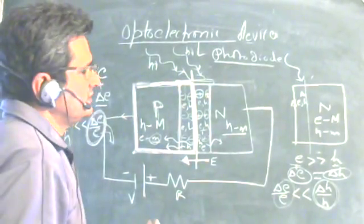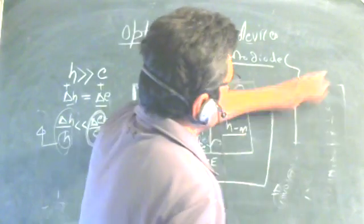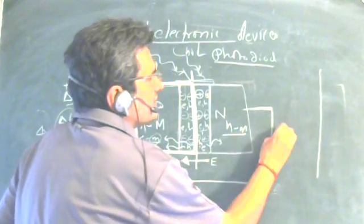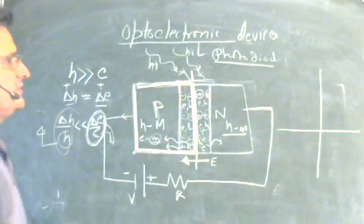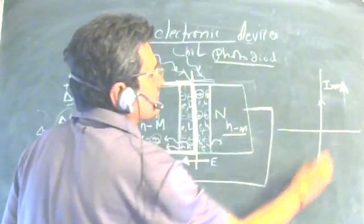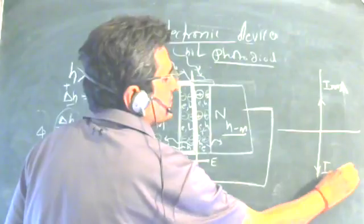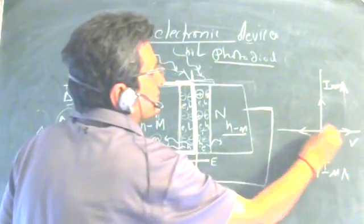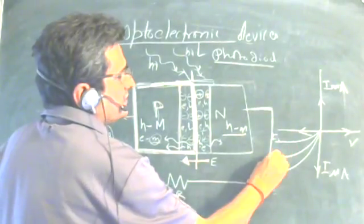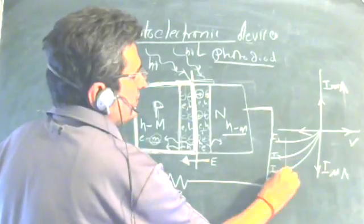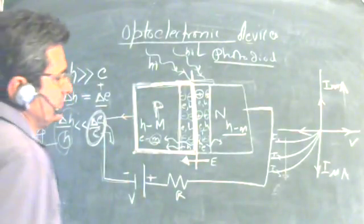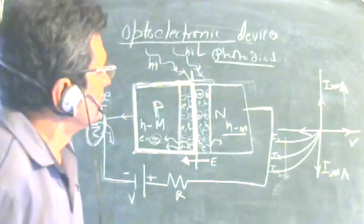We want to measure the signal intensity and generate the required output to operate simple switching circuits. In the characteristics graph, current in forward bias is always in milliamperes while current in reverse bias is in microamperes. The graph shows reverse voltage on one axis and forward voltage on the other, with multiple intensity curves I1, I2, I3 showing observable change in current with change in intensity.